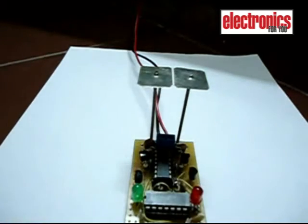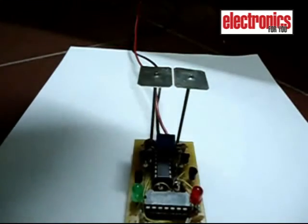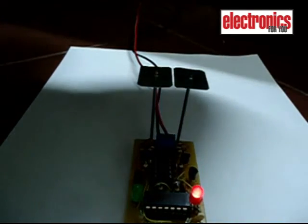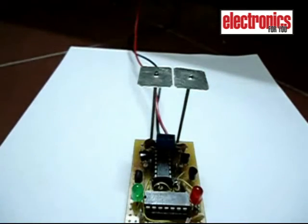To test a negatively charged body, rub a plastic comb with hair. Bring the comb near the detecting plate. Red LED glows, which means the charged body is negative.